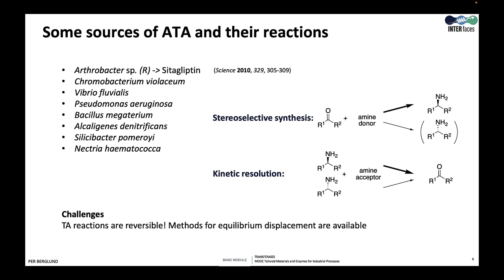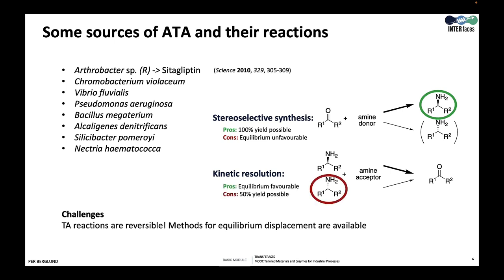The high stereoselectivity is an important property of transaminases, and there are two different strategies you can use to produce a chiral compound in high enantiomeric excess with a transaminase: stereoselective synthesis or kinetic resolution. In stereoselective synthesis, a pro-chiral substrate is used — such as a ketone — and the enzyme produces a chiral amine in high enantiomeric excess and close to 100% yield, since all substrate can be converted to the same product. In kinetic resolution, we start with a racemic amine, a 50-50 mixture of the two enantiomers, and the enzyme converts one of the substrates to the non-chiral product ketone, while the other is left behind. The maximal yield we can get of the chiral amine is just 50%.